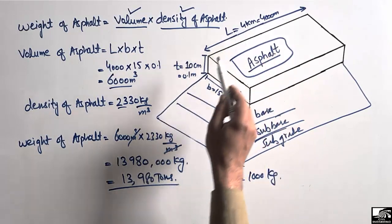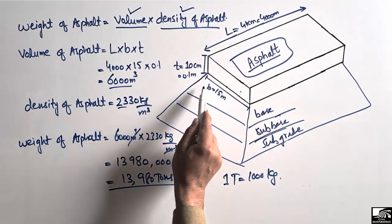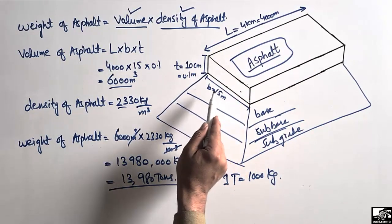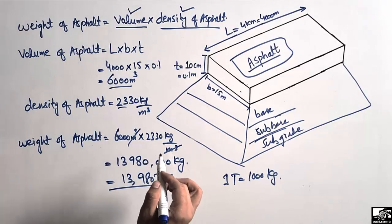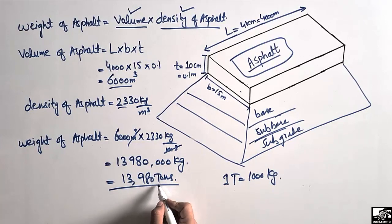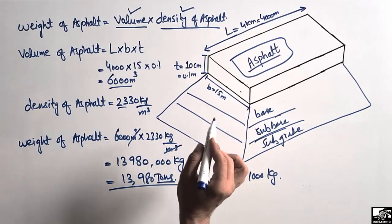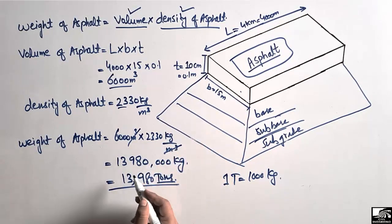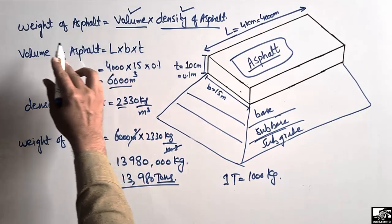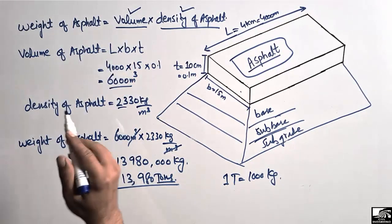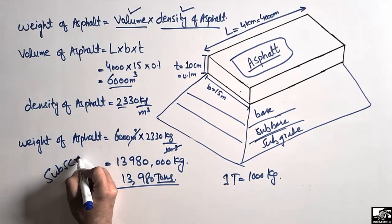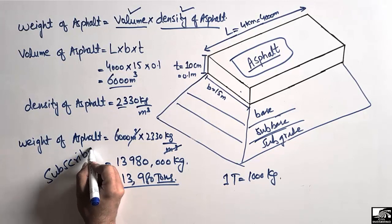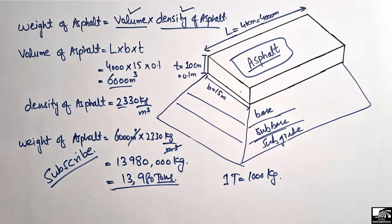To summarize: for a road with a length of 4000 meters, thickness of 0.1 meters, and width of 15 meters, the total asphalt weight is 13,980 tons. This is the simple way to find the weight of asphalt. Hope you guys understand — don't forget to subscribe to our channel for more civil engineering videos. Thank you for watching.